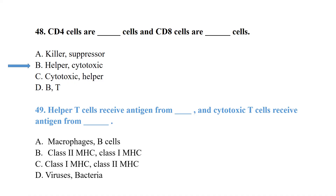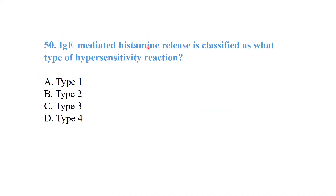Helper T cells receive antigen from MHC class 2, while cytotoxic T cells receive antigen from MHC class 1. IgE-mediated histamine release is classified as a type 1 hypersensitivity reaction.